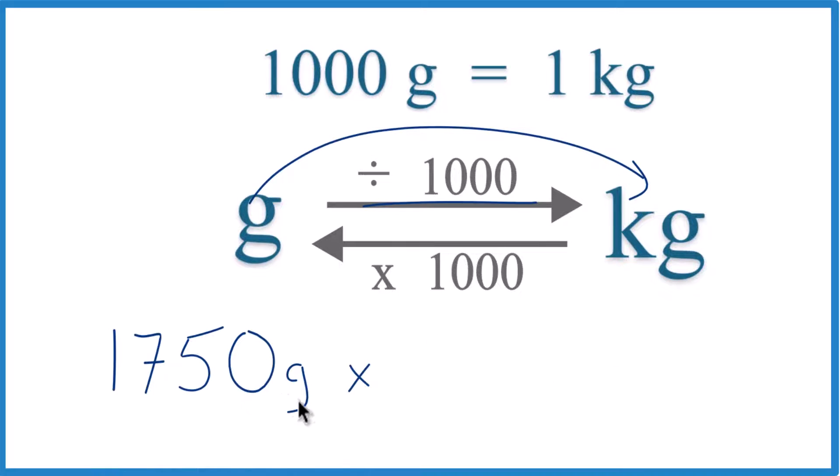So we have grams on top. We need to have grams on the bottom of our conversion factor so they cancel out. 1 kilogram per 1,000 grams. There's our 1 kilogram equals 1,000 grams. And since we have grams on the top, the bottom, they cancel out.